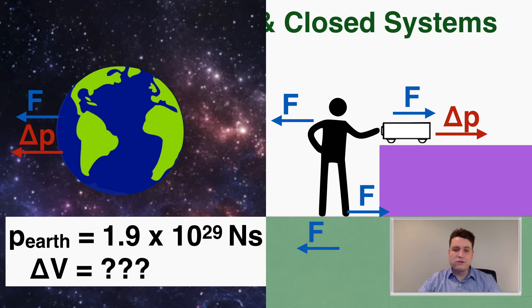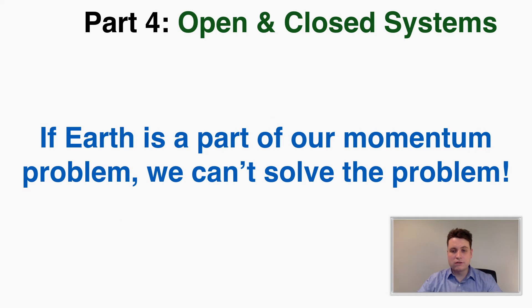This shows us that if earth is a part of our momentum problem — if it's one of the objects affected in a collision — we can't solve the problem. We can't find missing information using conservation, and this is not because momentum is not being conserved. It is definitely still being conserved. The reason we can't solve the problem is only because we can't really know anything about how earth's velocity changes as the result of very small interactions.